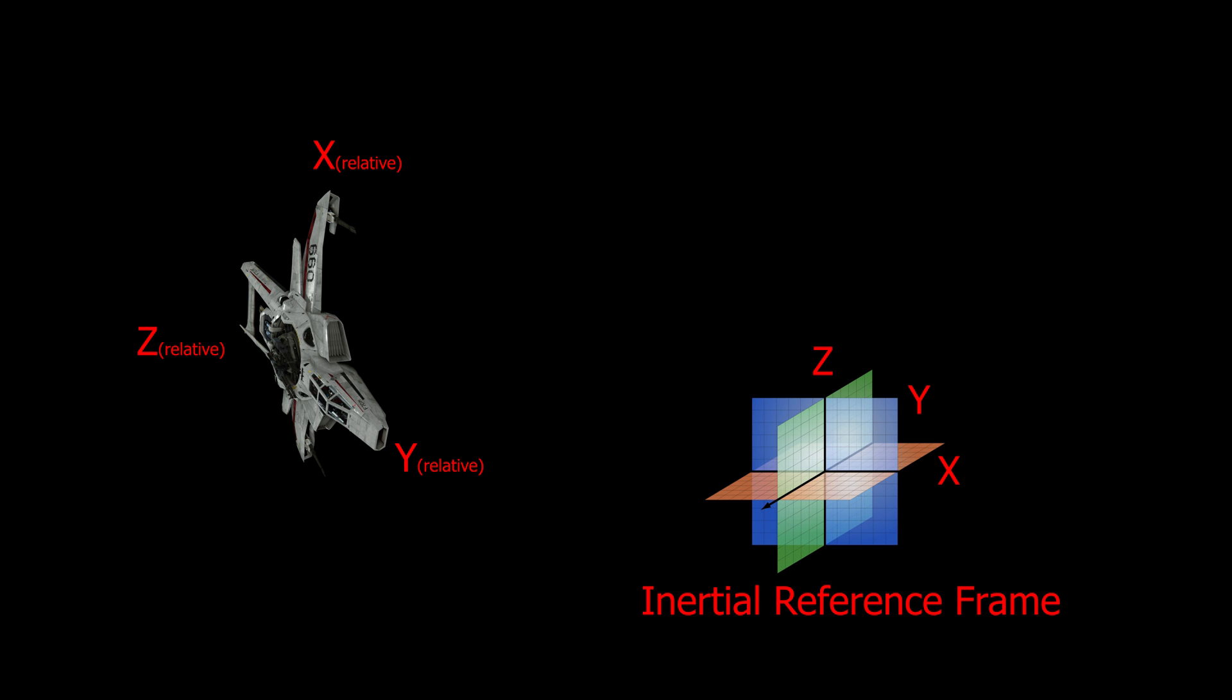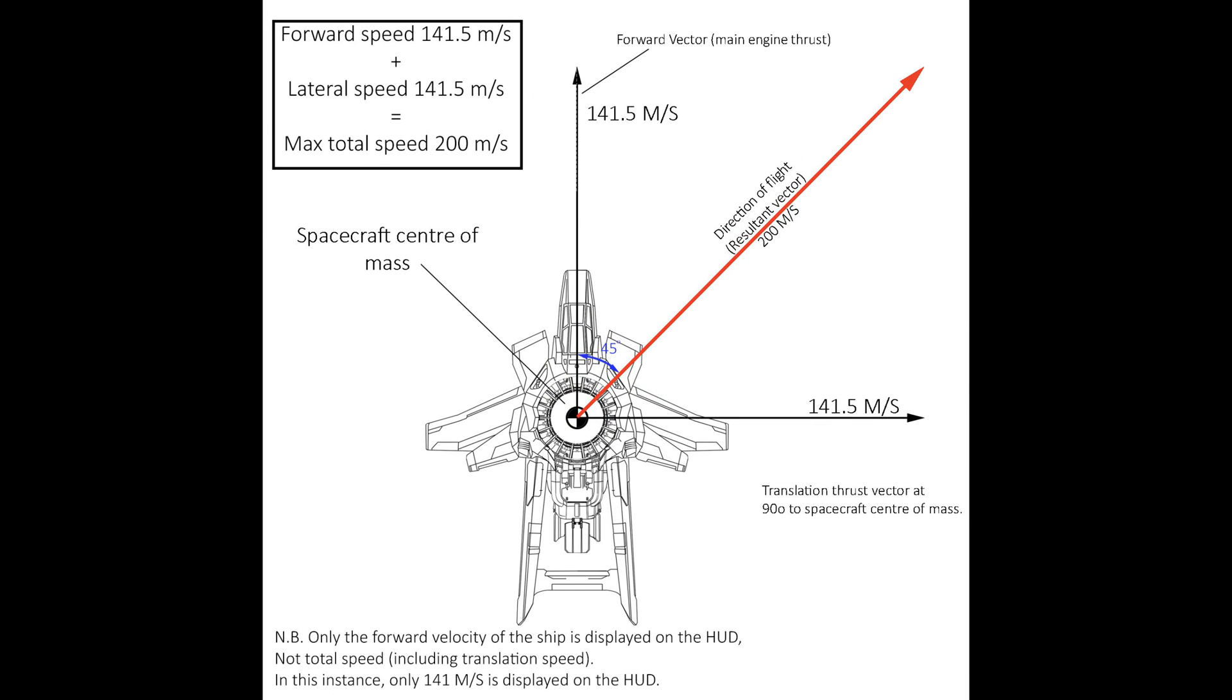Vectors can be described relative to a ship rather than the inertial reference plane. In this case, it is often useful to discuss vector components. For example, a ship translating forward and right at 200 meters per second will have a velocity vector 45 degrees off the spacecraft's nose with a magnitude of 200 meters per second.